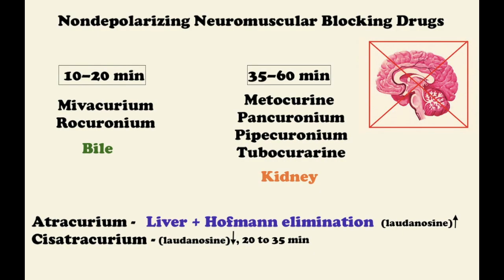All NM blockers are given parenterally. They are highly polar drugs and do not cross the blood-brain barrier. Some drugs are metabolized in bile — for example, mivacurium, which is withdrawn in the United States — or eliminated in the bile, for example, rocuronium. These drugs have a shorter duration of action, approximately 10 to 20 minutes. Additionally, rocuronium has the most rapid onset time, approximately 60 to 120 seconds.